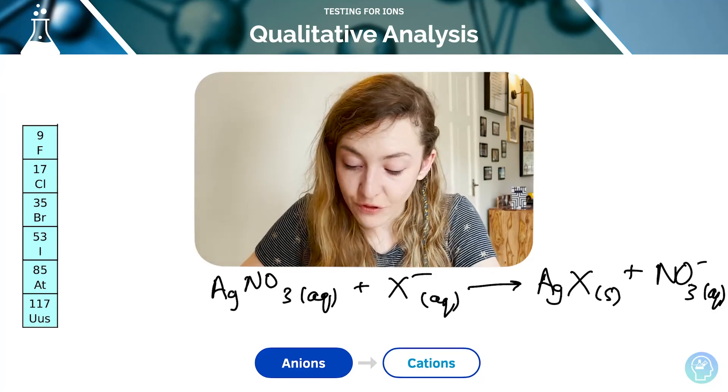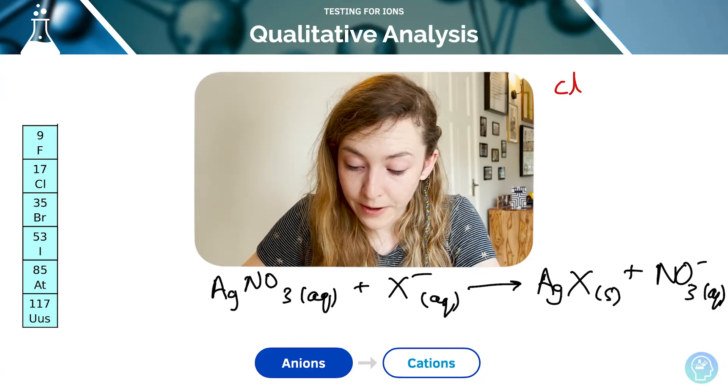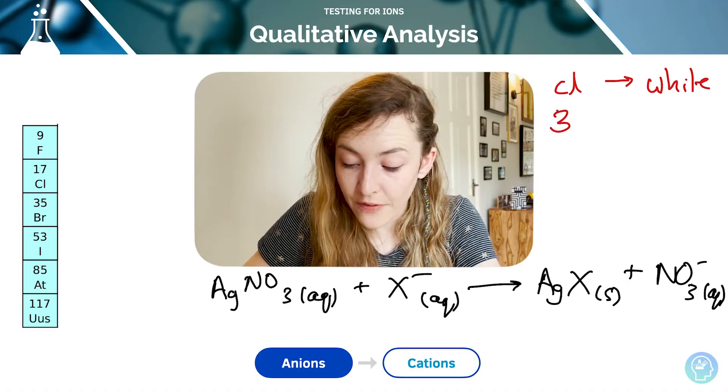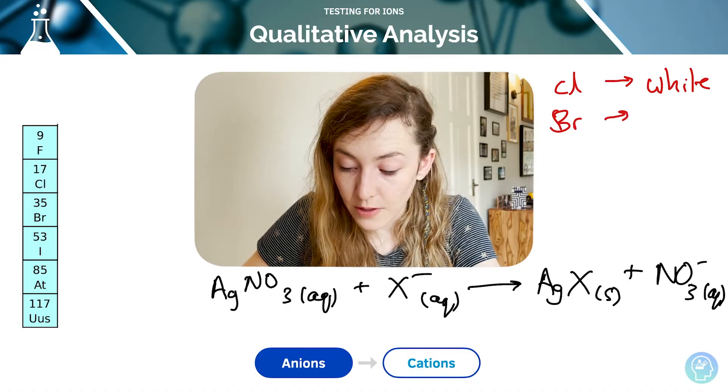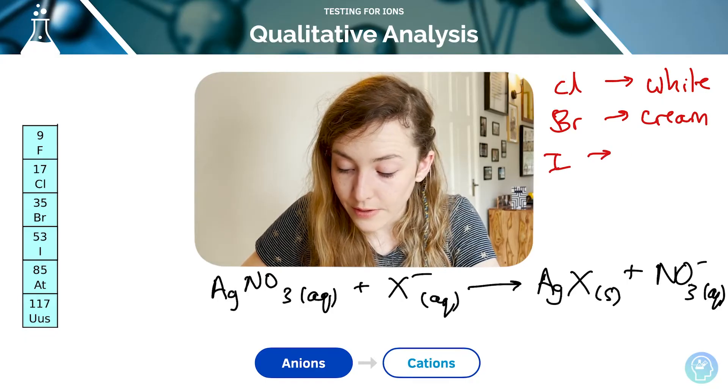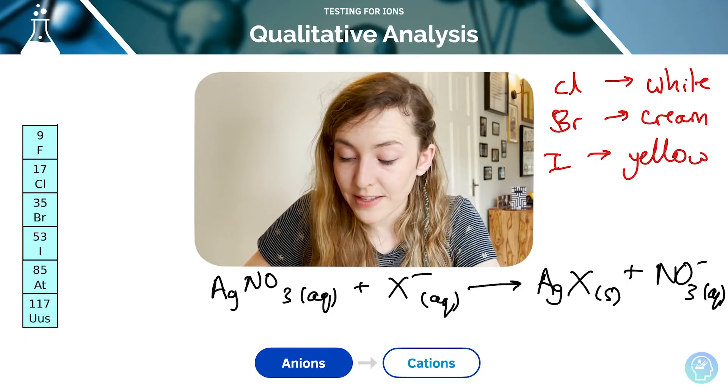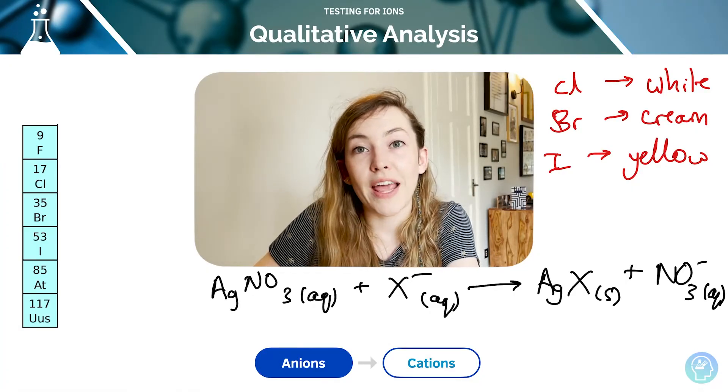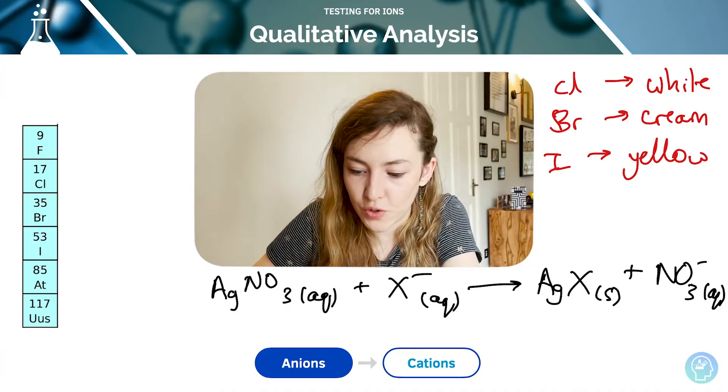Remember that if your X is chlorine, then it's going to be a white precipitate. If it's bromine, it's going to be cream. If it's iodine, it's going to be yellow. If you don't get a precipitate, but you're told that there is a halide ion in there, then it's fluorine, because that does not produce a precipitate.